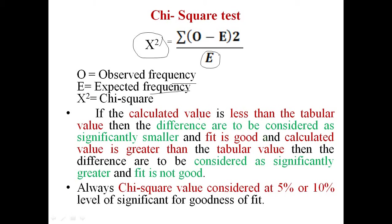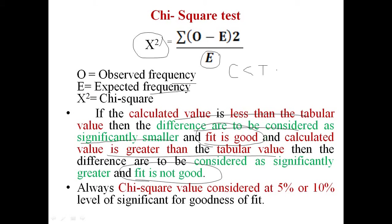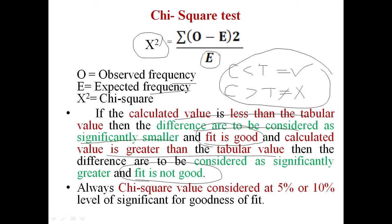From the formula we get a specific value. If the calculated value is less than the tabular value, the differences are considered significantly smaller and it fits well. If it is the opposite — that is, if the calculated value is greater than the tabular value — then the fit is not good. So: calculated value less than tabular value means good fit; calculated value greater than tabular value means the fit is not good.